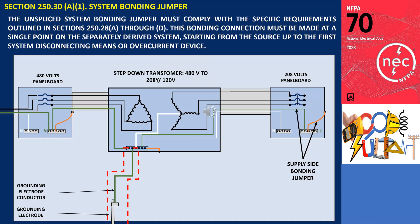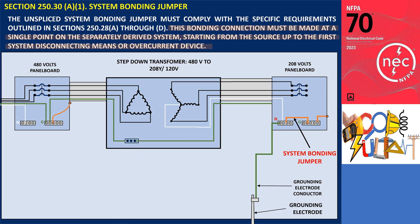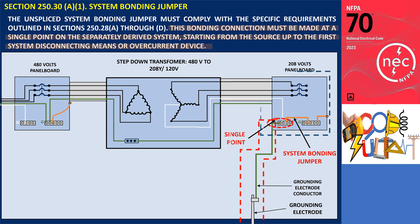The system bonding jumper connection must be made at a single point on the separately derived system. This single point is established as the connection for the grounding electrode, which connects the equipment grounding conductors to the grounded circuit conductors. This connection is specifically installed at the separately derived system, as shown in the illustration. In another illustration, the system bonding jumper is located within the first disconnecting means or overcurrent device of the separately derived system. Further, the location of the system bonding jumper and the connection to the grounding electrode conductor must occur at the same point.